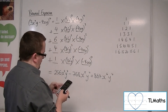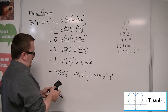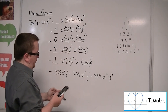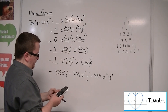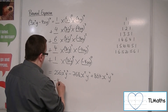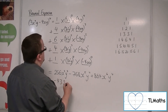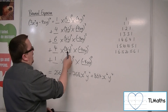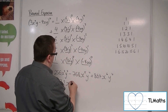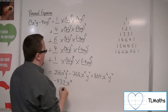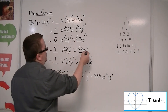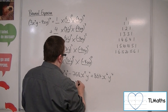Then we have 4 times 3 to the power of 3 times minus 4, which is minus 432. We've got x squared cubed, so x to the 6 times x to the 1, giving x to the 7. And y cubed times y, so y to the 4.